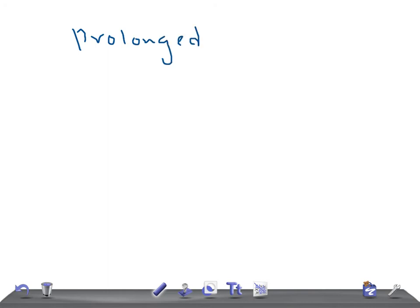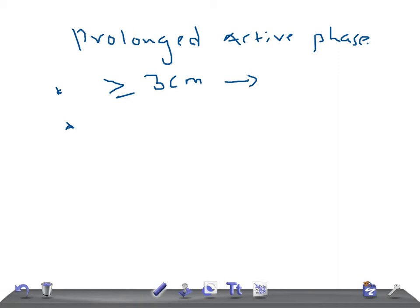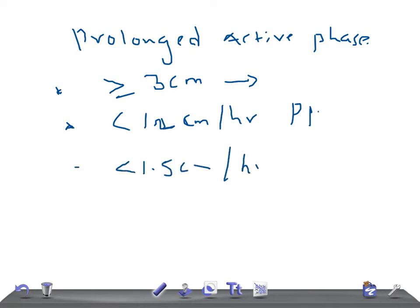The definition of prolonged active phase: cervical dilation has reached three centimeters or more — meaning the acceleration phase of dilation has been reached — and is prolonged. Prolongation is diagnosed if cervical dilation is less than 1.2 centimeters per hour in a primipara, or less than 1.5 centimeters per hour in a multipara.